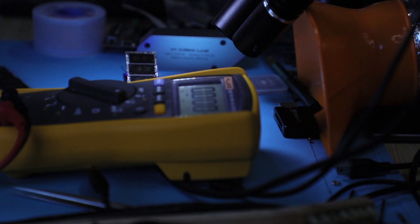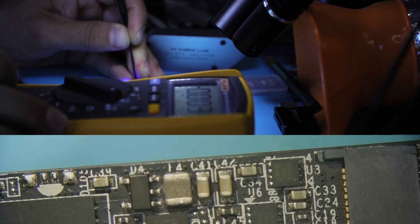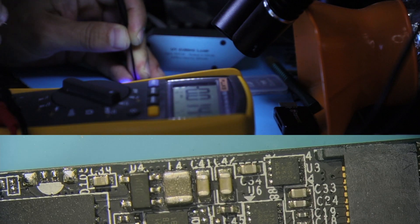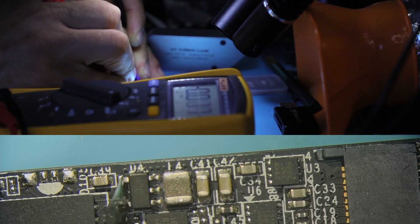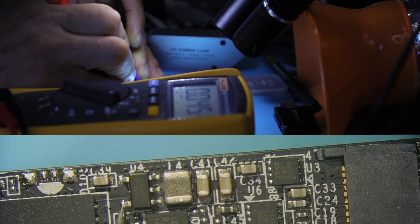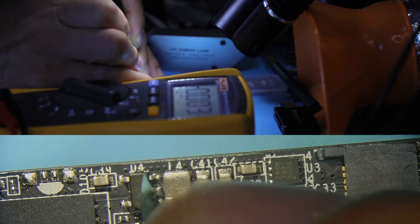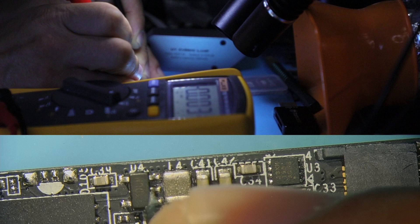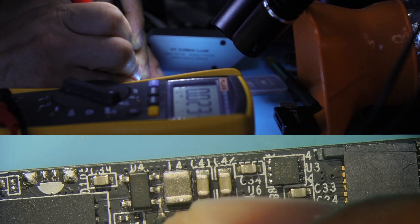The black probe will go towards the ground, and then with the red probe we're gonna see what measurements we can get. I'm not the best angle for you guys, but you can probably see the numbers. So I'm probing this pin here, we got 3.4. This pin here we got 0.03. This here nothing. This here nothing. And this one here 0.23.